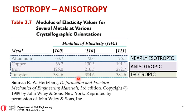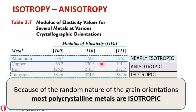These measurements are at the micro level — within the same grain boundaries. We have seen that polycrystalline metals may have various grain boundaries, and because of the random nature of grain orientations, most polycrystalline metals are known as isotropic. So at the micro level, even though iron is anisotropic, at the macro level it is considered an isotropic material.